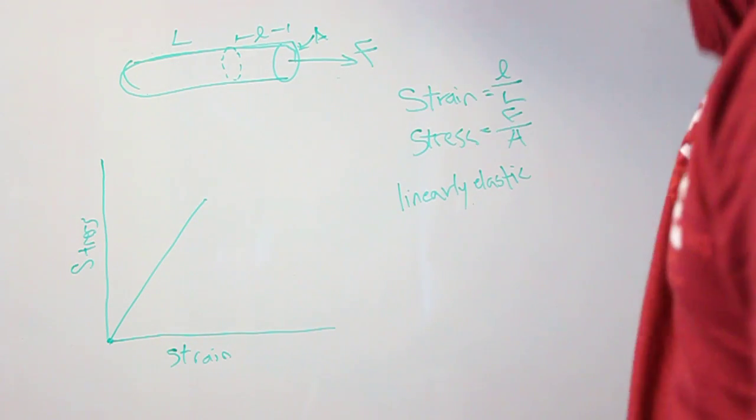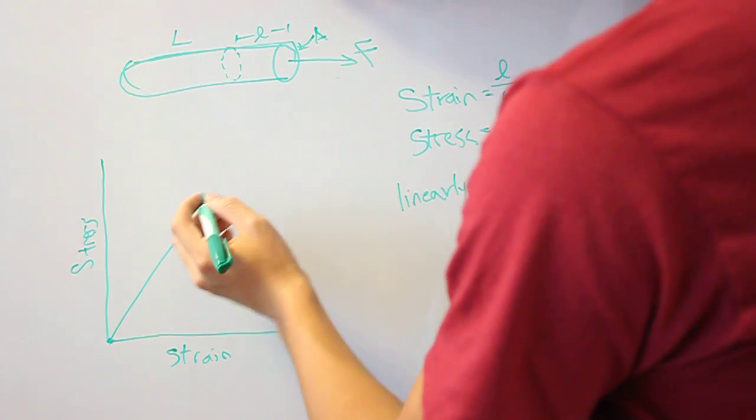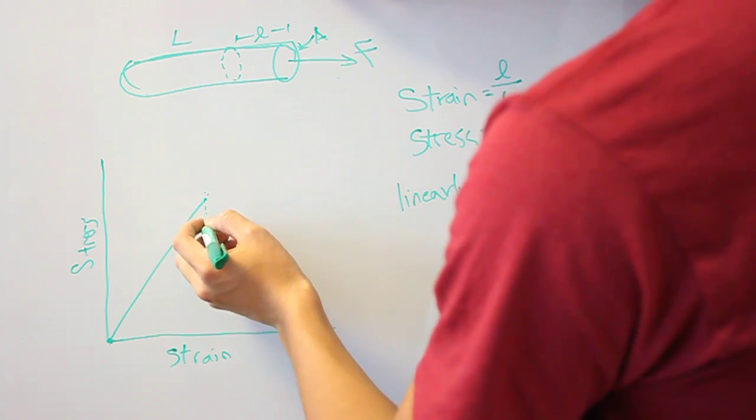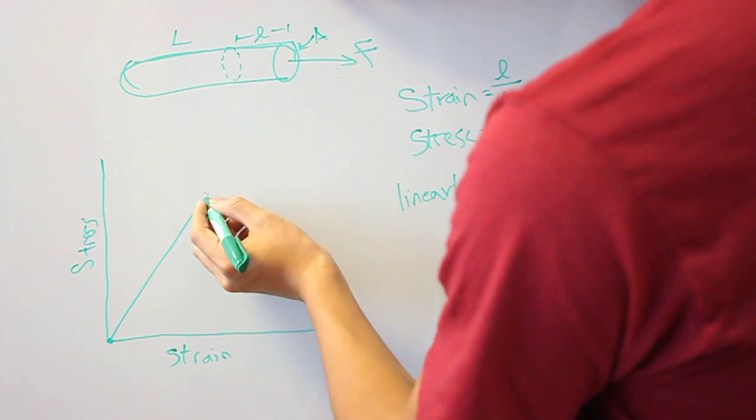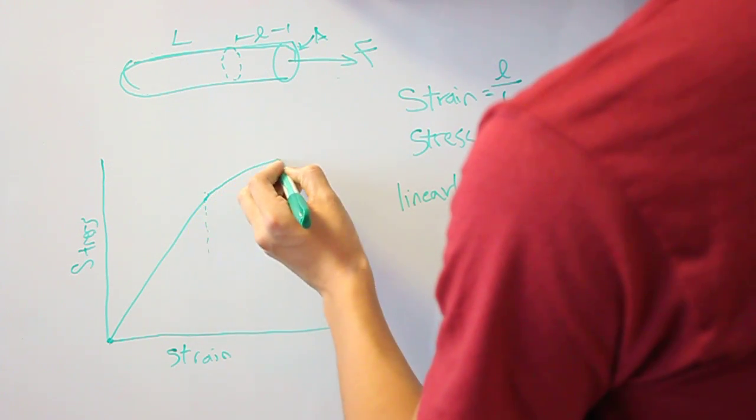Now, there's some point for all materials where it no longer behaves elastically. And we call that the deformation point, because what happens is, say this is it. At that point, your line begins to level off.